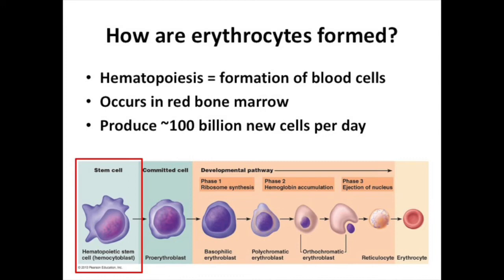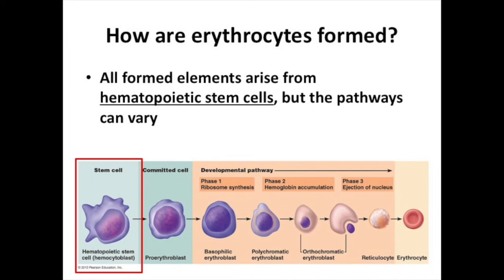Looking at this figure, every red blood cell, erythrocyte, leukocyte, or platelet starts out as a hematopoietic stem cell — the undifferentiated cell in the bone marrow. It has the potential to become any of those cells at this point. Note: when I use terms like erythropoiesis, hematopoiesis, or carbaminohemoglobin, you probably won't see 'define this term' on a test, but I will use these terms in questions and I expect you to know them, so keep that in mind as you study.